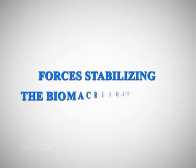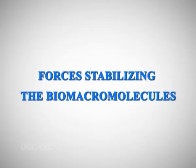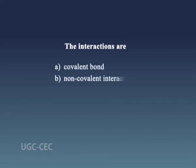Next is the process of stabilizing biomacromolecules. The monomeric units of biomacromolecules like proteins, nucleic acids, and carbohydrates have different types of interactions to form the functional structure of these biomacromolecules. The interactions are covalent bonds and non-covalent interactions.